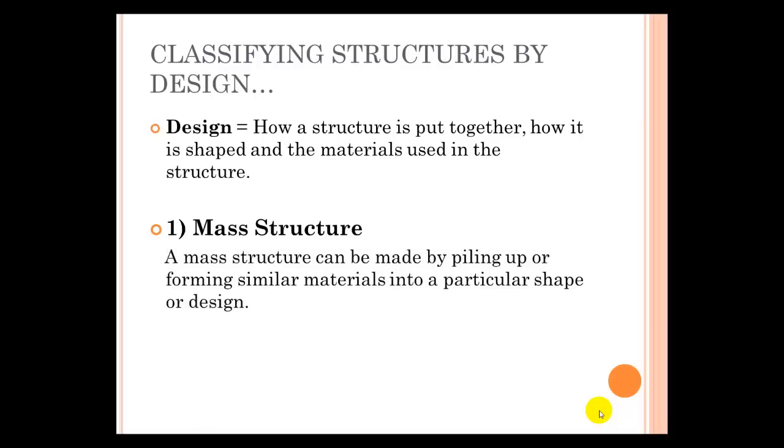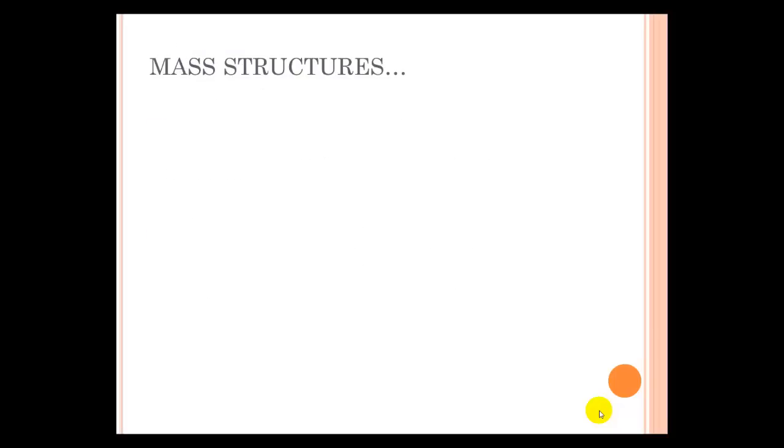A mass structure can simply be made by piling things up, or by forming similar materials into a particular shape or design. So a mass structure is generally made of one type of thing.